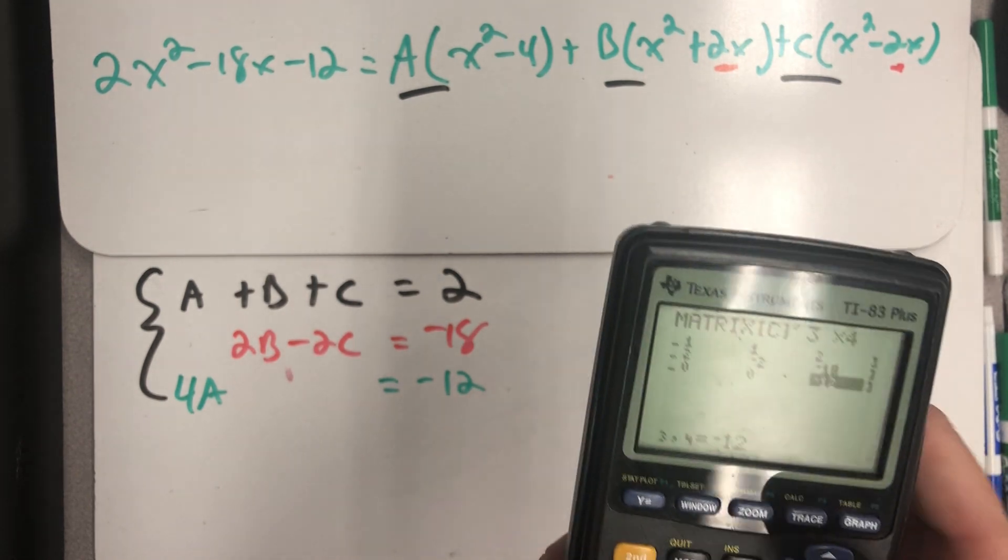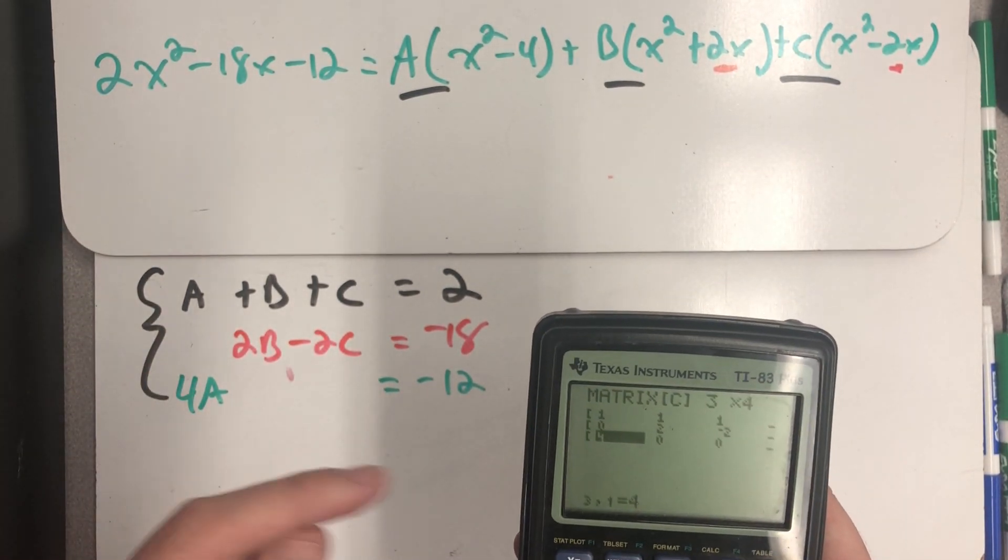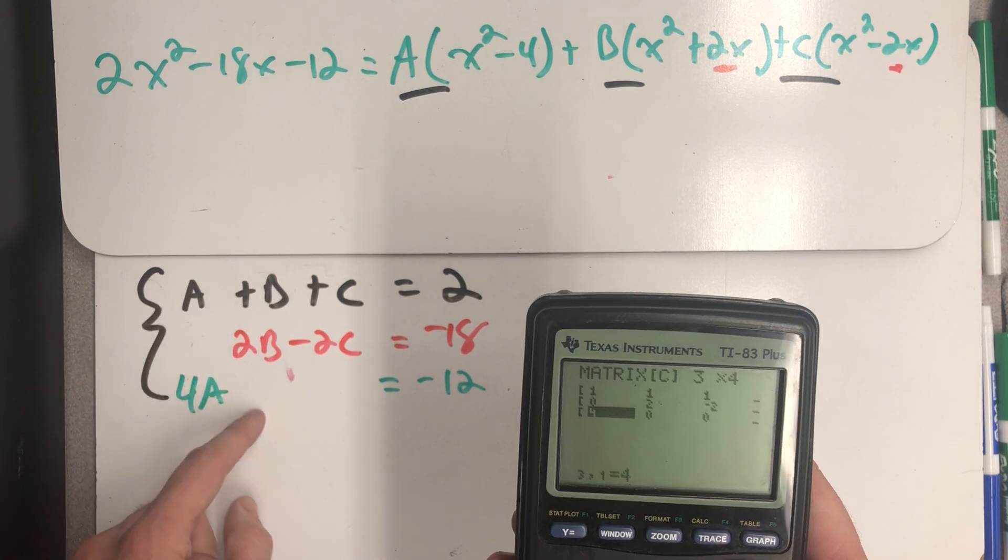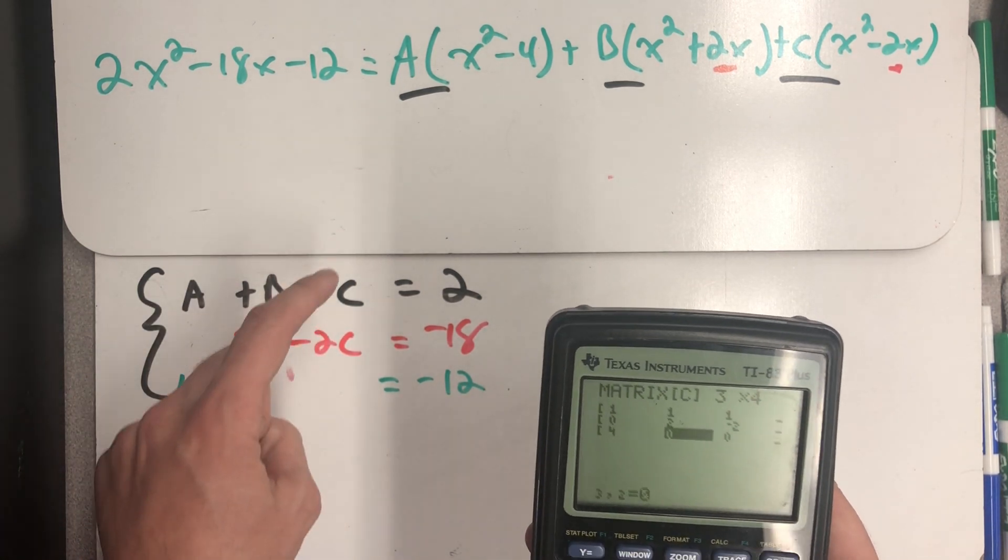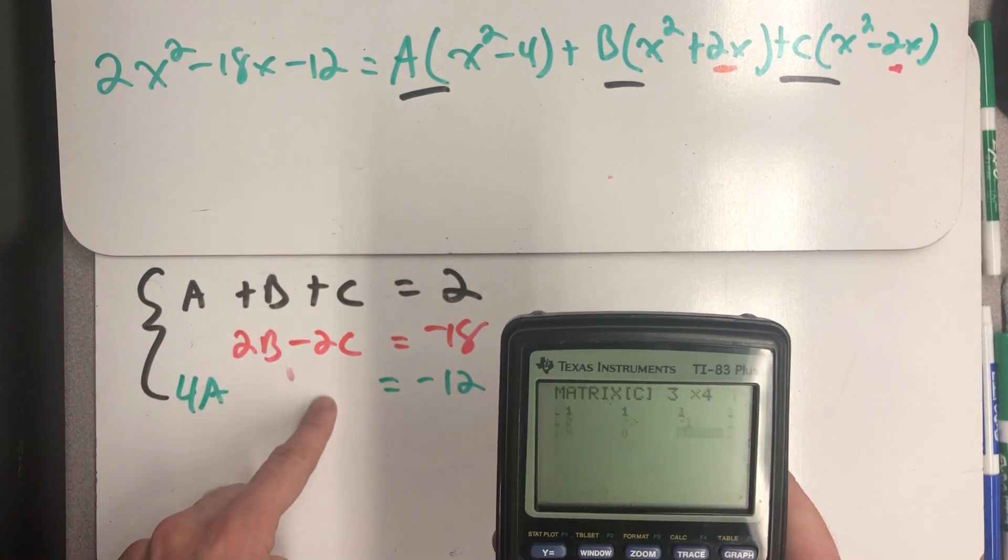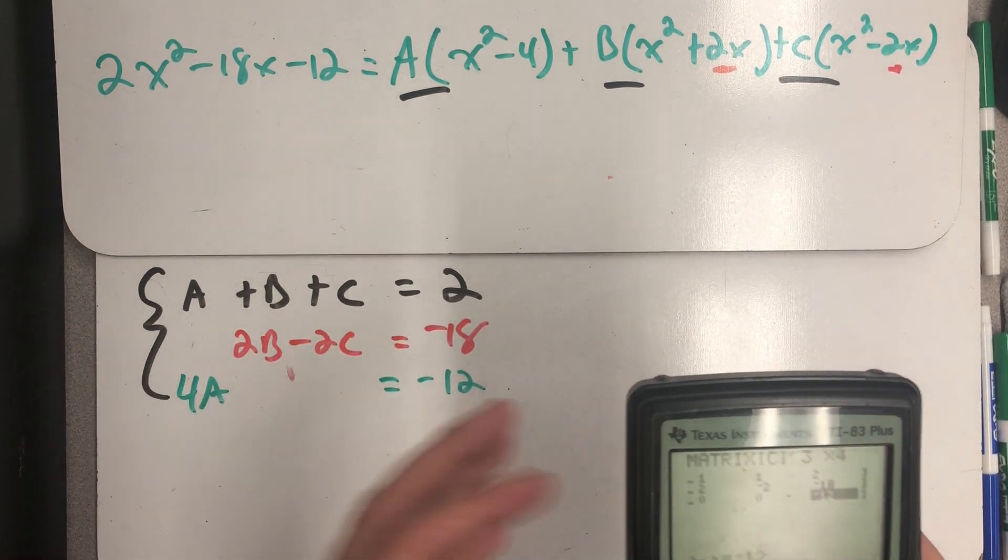Again I'm just going to go through and make sure I entered it in all correctly. One, zero, four, one, zero, four. One, two, zero. One, two, zero. One, minus two, zero. And then finally two, minus 18, minus 12.